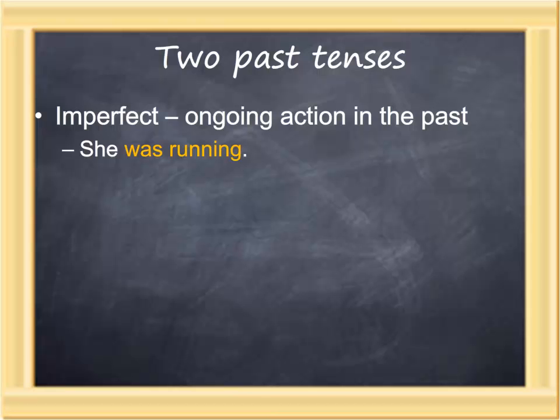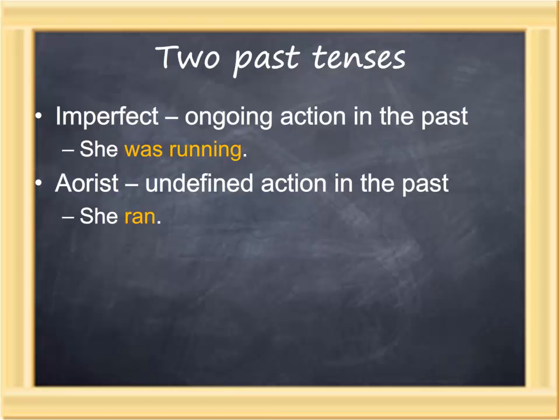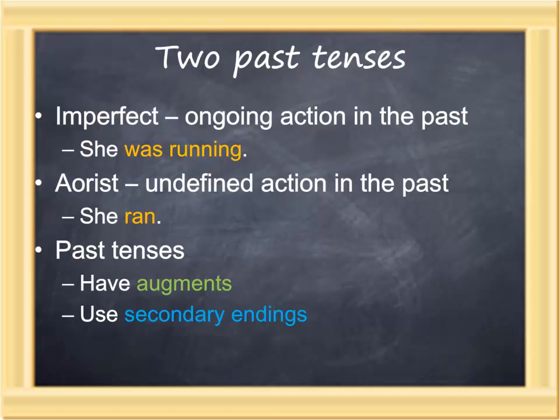The aorist tense, which we'll learn in a future lesson, is more undefined action in the past. It's quite similar to the English past tense—'she ran'—although the aorist can have other connotations. The important point is that the aorist does not describe any particular type of action; it's undefined action in the past. Past tenses have augments, and past tenses use secondary endings.